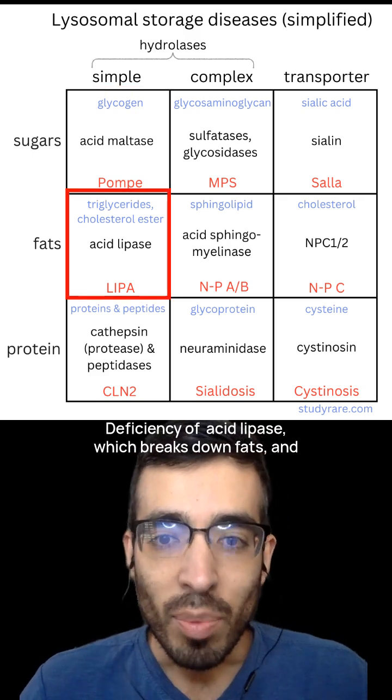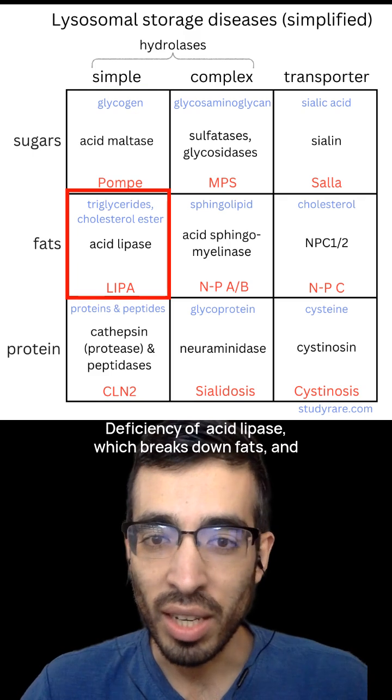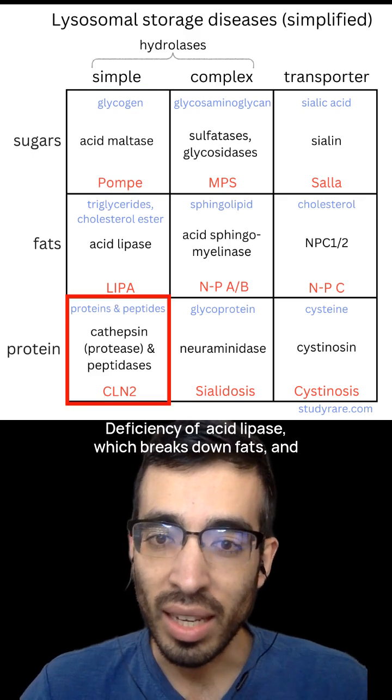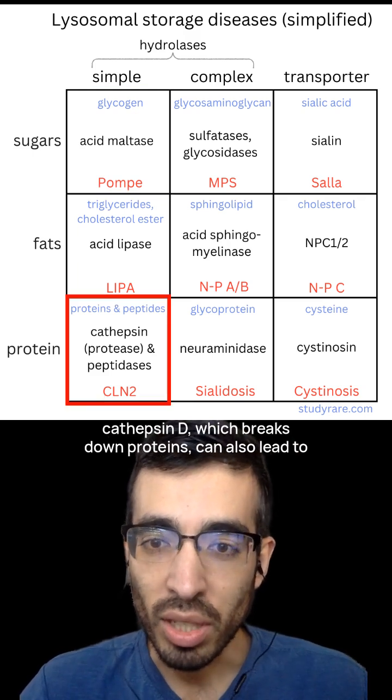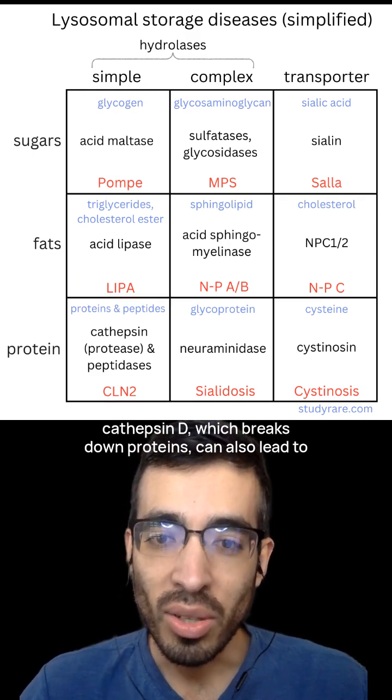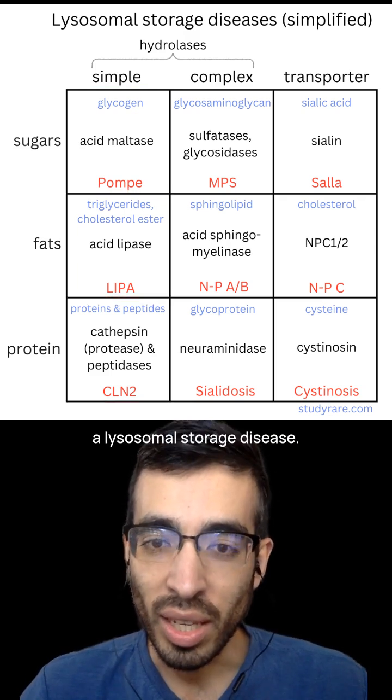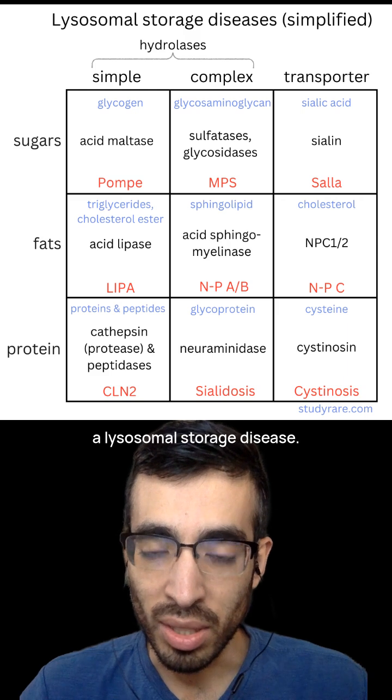Deficiency of acid lipase, which breaks down fats, and cathepsin-D, which breaks down proteins, can also lead to a lysosomal storage disease.